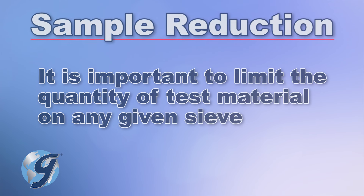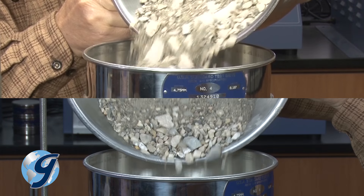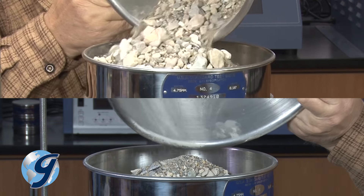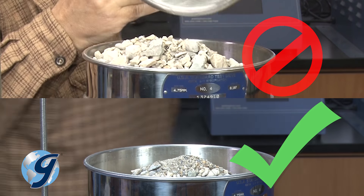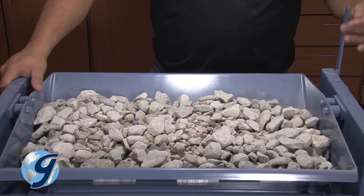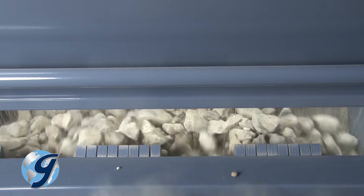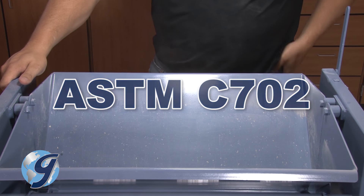It is important to limit the quantity of test materials on any given sieve so that all particles have the opportunity to reach the sieve openings a number of times during sieving operations. For this demonstration, the bulk sample has already been reduced to an amount suitable for testing using the applicable procedures described in ASTM C702.